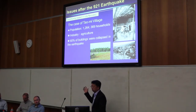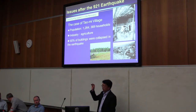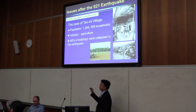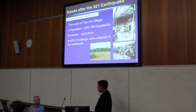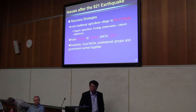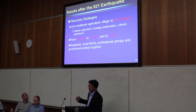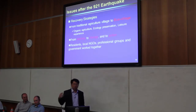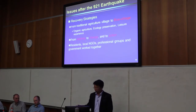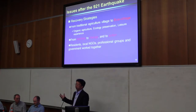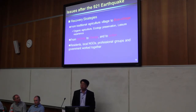I will share one recovery story in Taomi village, which is very near the epicenter. The population of this village is about 1,200, with about 369 households. The major industry is agriculture. After the earthquake, 60% of the buildings were collapsed. The recovery strategy was to transform the traditional agricultural village into what they call an eco-village — meaning organic agriculture, ecology preservation, and natural experience. They engaged in learning, change, and action, involving residents, local non-profit organizations, professional groups, and local government working together.